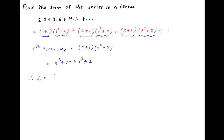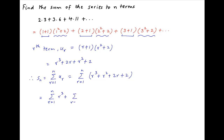And therefore, the sum of the first n terms of the given series, denoted by Sn, is equal to summation of r cube plus r square plus 2r plus 2, where r goes from 1 to n. And this is equal to summation r cube plus summation r square plus 2 times summation r plus 2 times summation 1, where r goes from 1 to n.